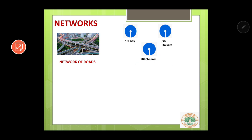There will be some kind of communication between these three headquarters. If communication takes place between different branches, then we can say that a network has been formed. This is called a network of banks. Now let us come to computers.